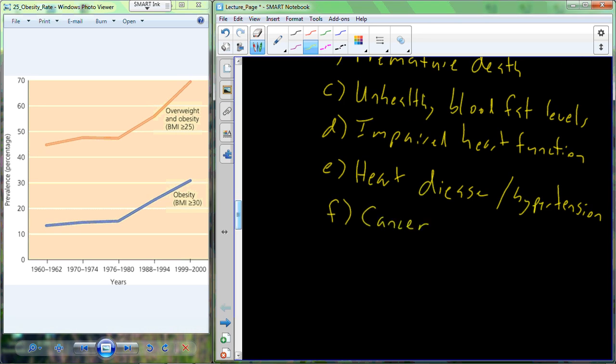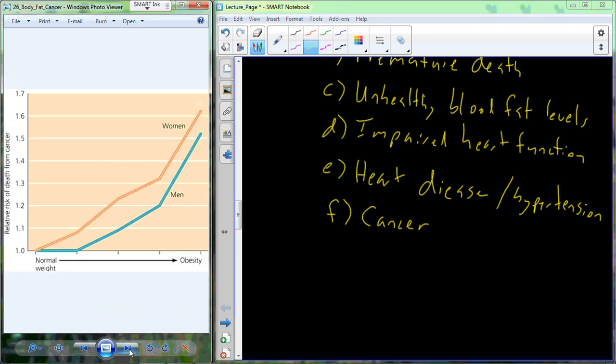Furthermore, individuals with high levels of body fat are at much higher risk for cancer. This figure here you can see as you go from normal weight to obesity on the x-axis, this is your relative risk for death from cancer. And as you go towards obesity, you can see that we have both in men and women this severe upward trend where the risk in obese individuals is one and a half or more times likely for death from cancer.